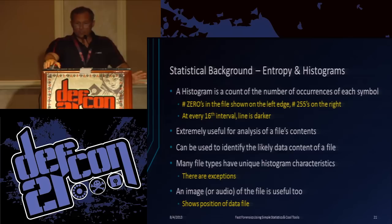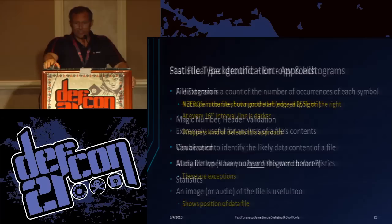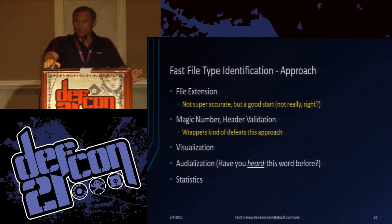On the histogram chart, the left side is the zero count and the right side is the 255 count. The darker lines are at 16-value intervals - so at 16, 32, etc., the line is a little darker, just to break it up. Many file types have unique histogram characteristics, and you can identify them very quickly in many cases.